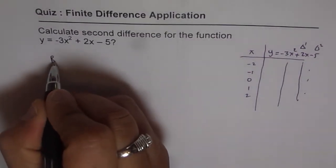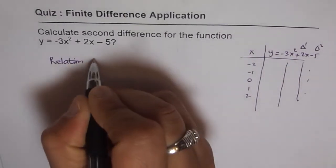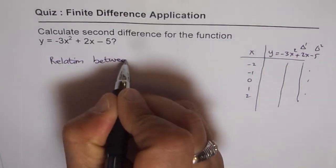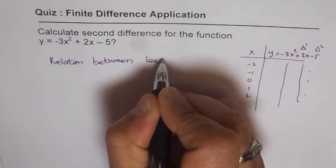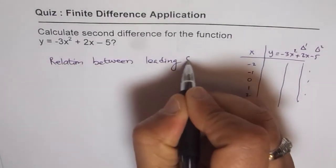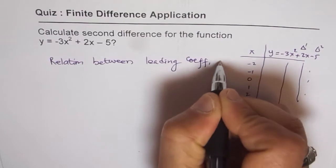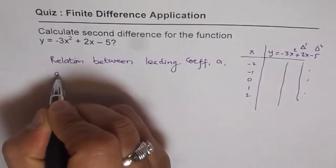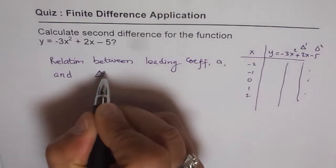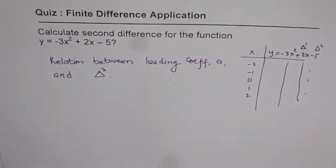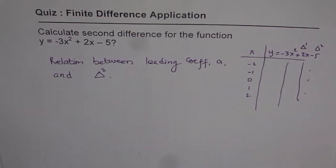So find the relation between leading coefficient which is A and second difference. I write second difference like delta 2 means second difference. Do you know the relation between them? If you know then it takes a minute to answer this question, rather a second.